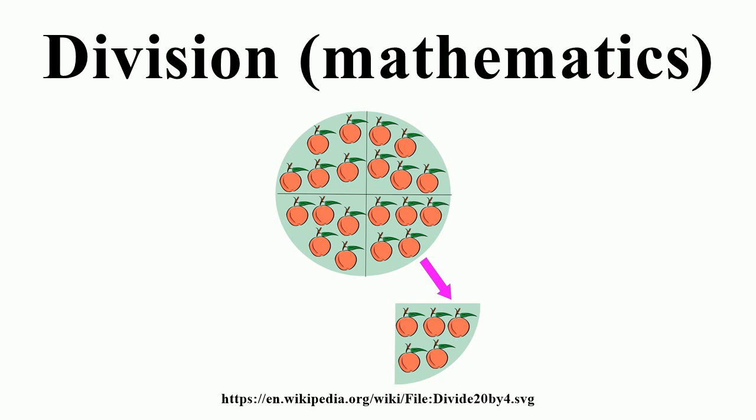division is often introduced through the notion of sharing out a set of objects, for example a pile of sweets, into a number of equal portions. Distributing the objects several at a time in each round of sharing to each portion leads to the idea of chunking,